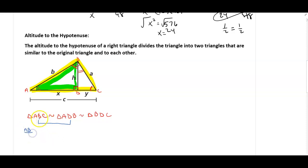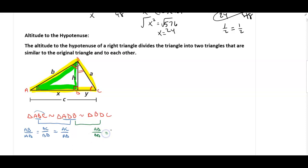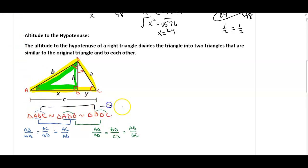From the first two similar triangles, the ratios are: AB to AD equals BC to BD, which equals AC to AB. From the second pair: AD to BD equals BD to CD, which equals AB to BC. From the third pair: AB to BD equals BC to CD, which equals AC to BC.